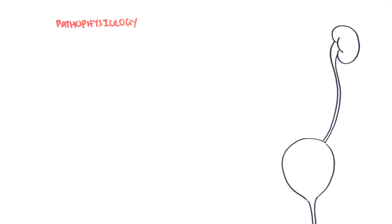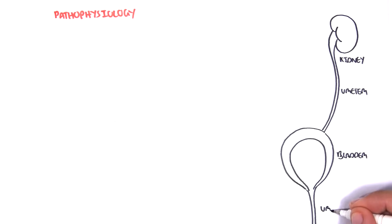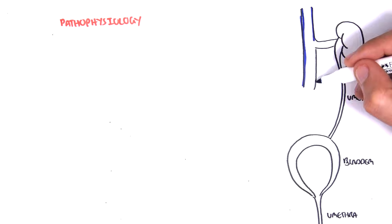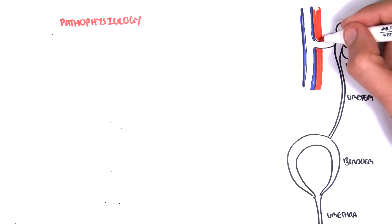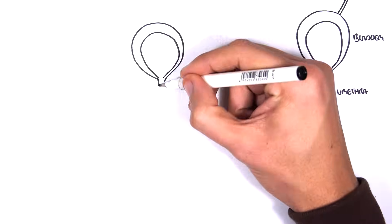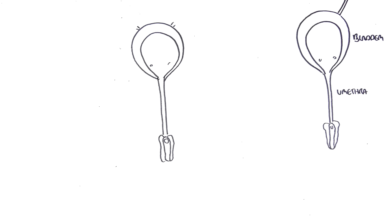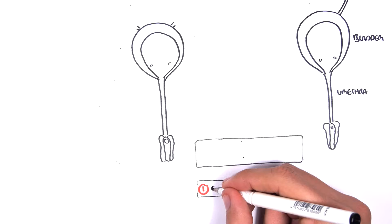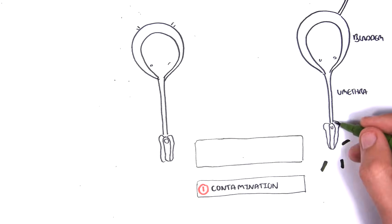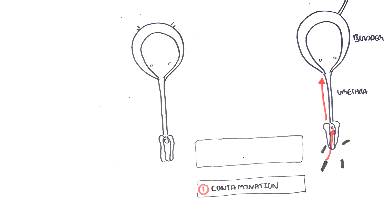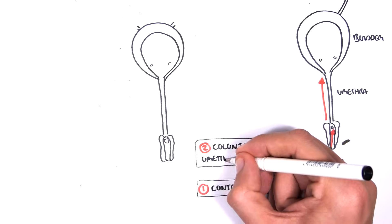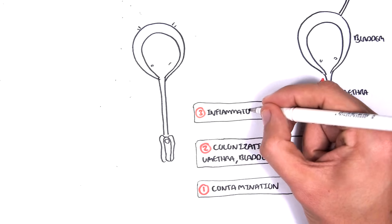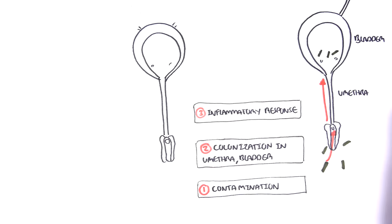Here again is the kidney, the ureter, the bladder, the urethra. Here we have the inferior vena cava, and the renal vein comes from the kidney and enters the inferior vena cava. Behind the inferior vena cava we have the descending aorta, which supplies the kidneys via the branching renal artery. What initially happens is contamination — bacteria contaminates the lower urinary tract because of certain risk factors. Let's say the bacteria is E. coli, the most common in 80% of cases. They initially colonize the urethra and the bladder, triggering an inflammatory response in the lower urinary tract.